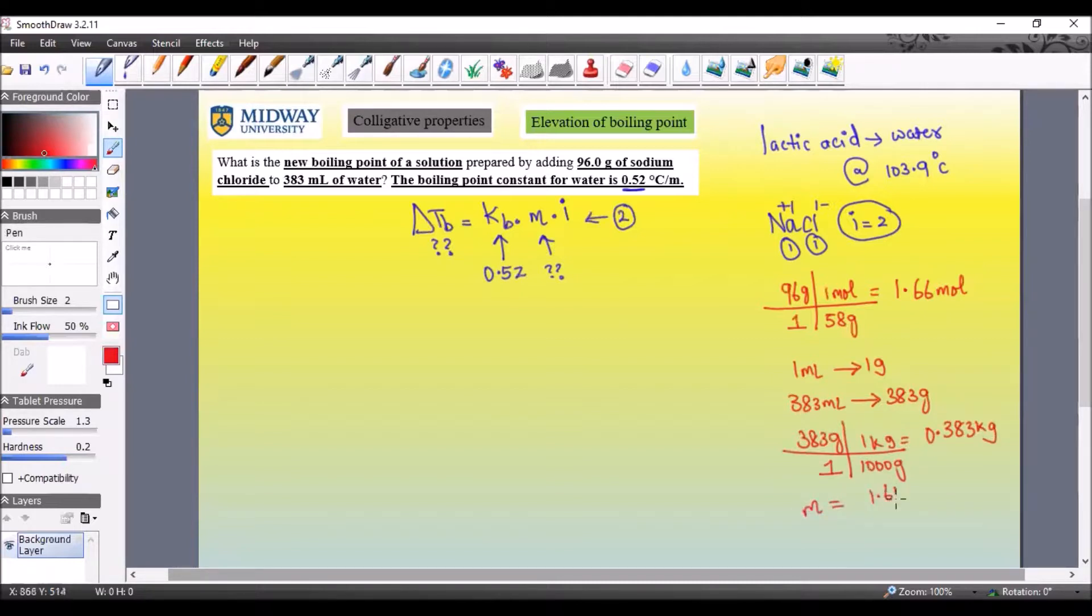Now we can solve for molality, which is 1.66 moles over 0.383 kg, divided by 0.383, which happens to be 4.32 m. So now we know this value is 4.32 m.